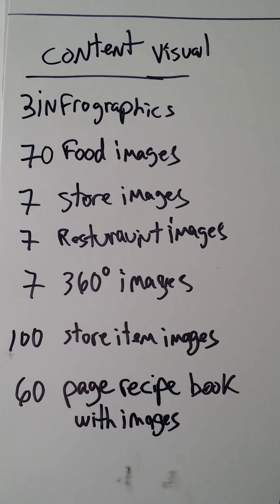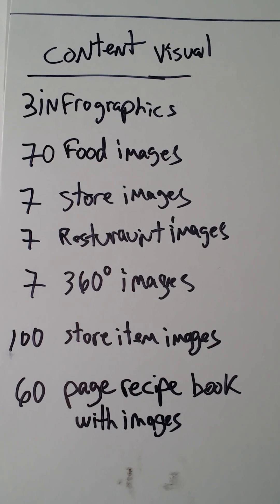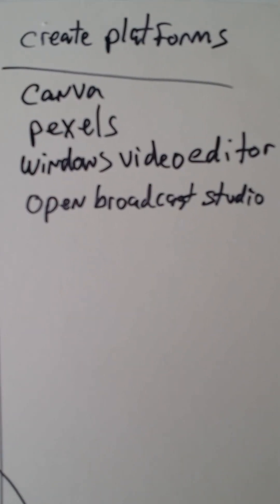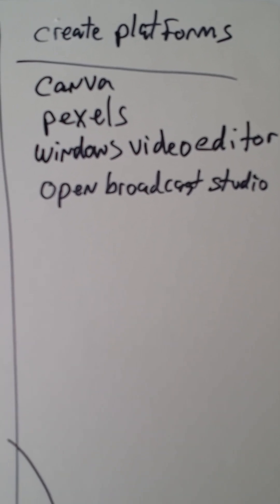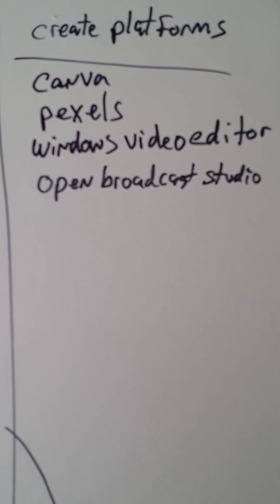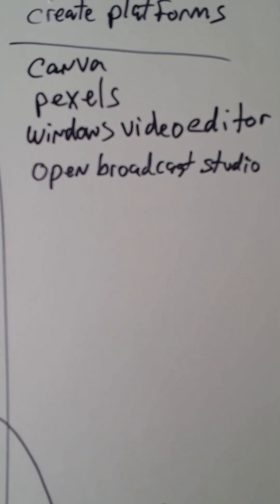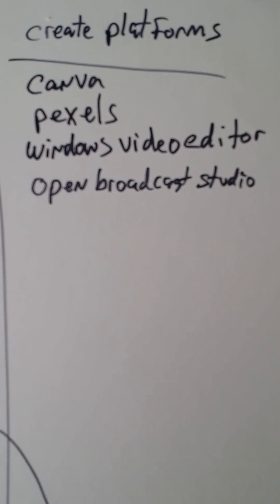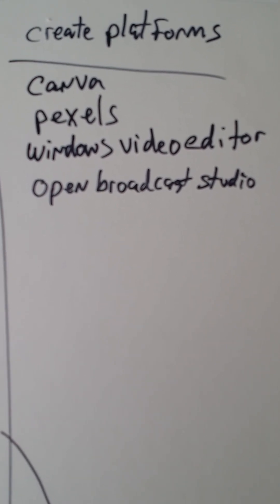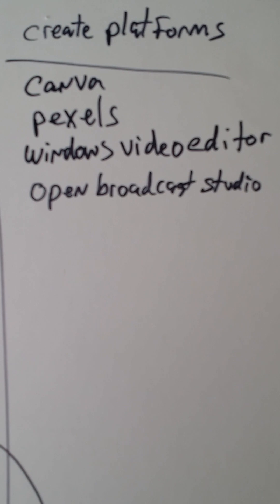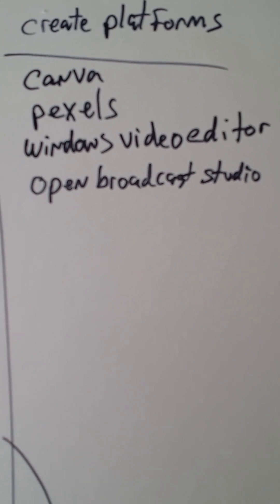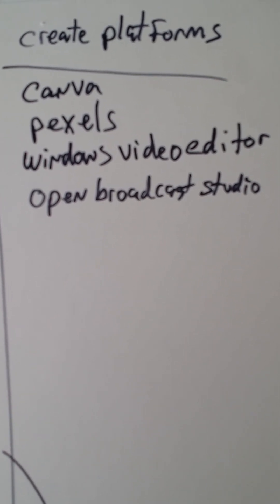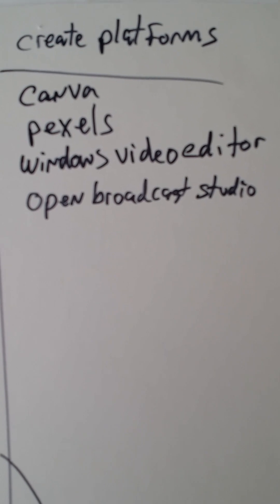This is really all you need for a restaurant, and you could use the same template for whatever you're doing. For platforms to create all this stuff, you use Canva. Canva is where you create your thumbnails and infographics, and you can even upload your images and videos if they're a certain size.